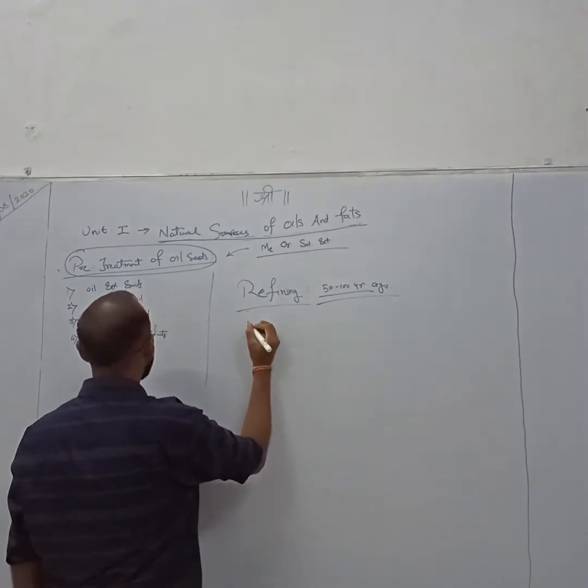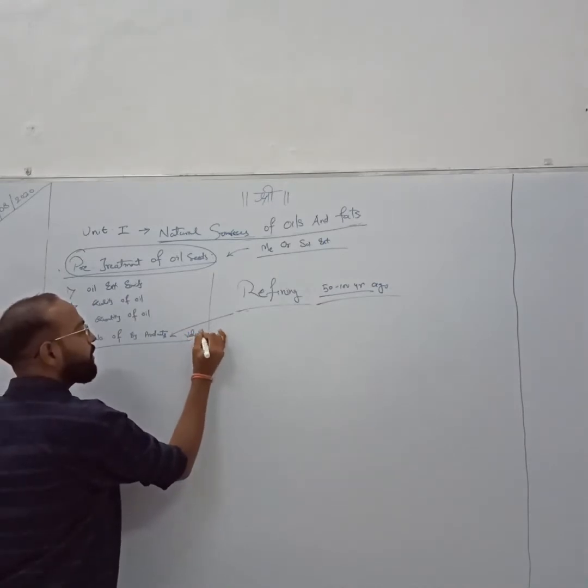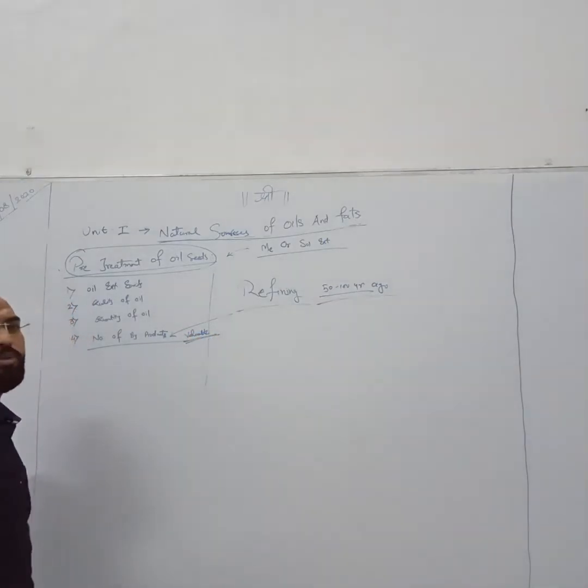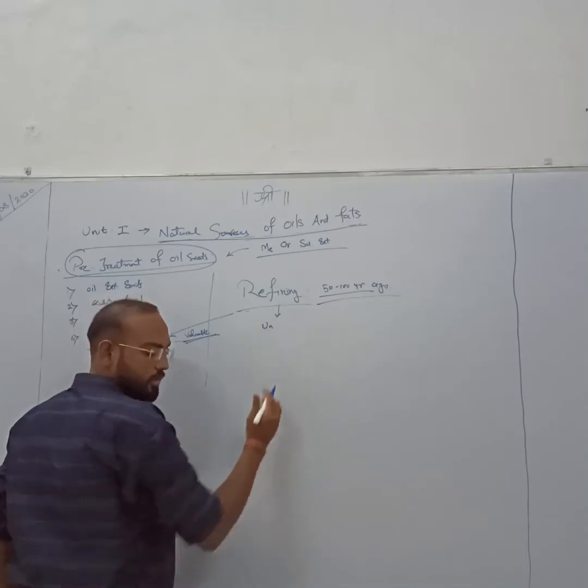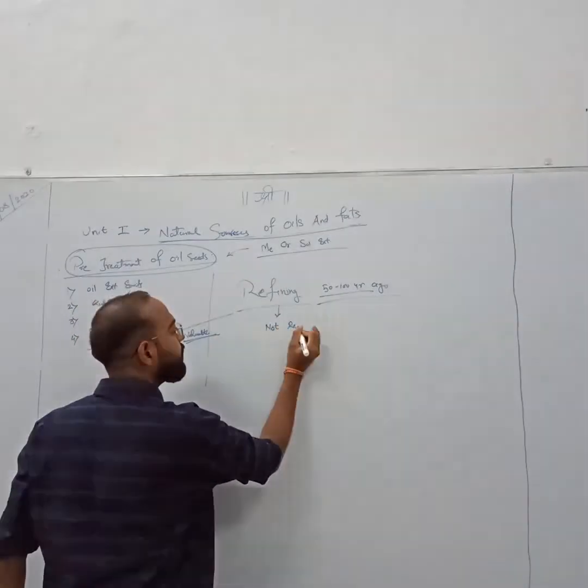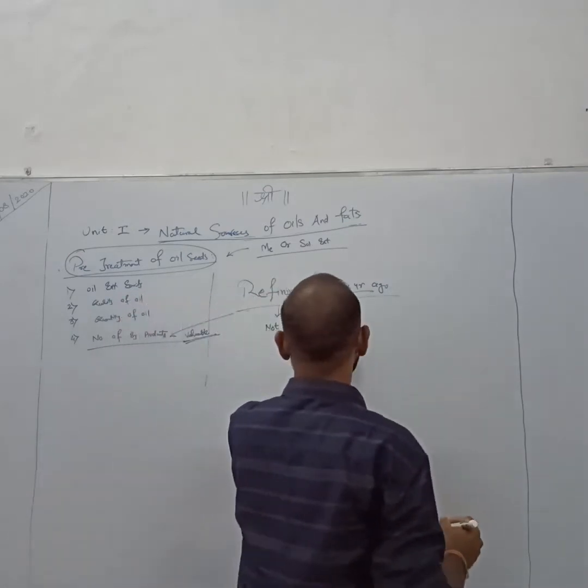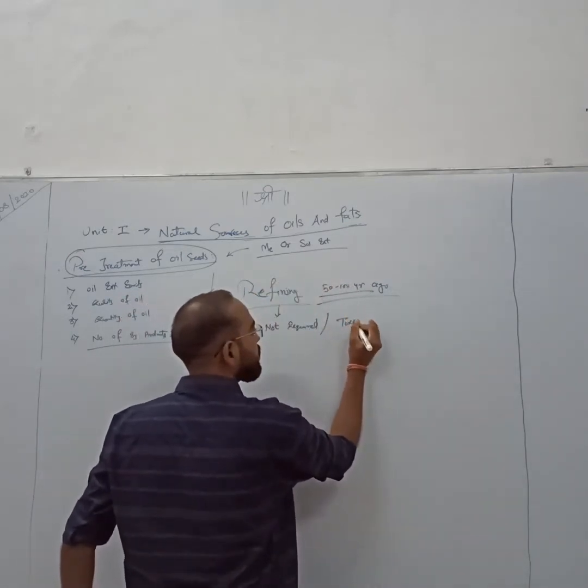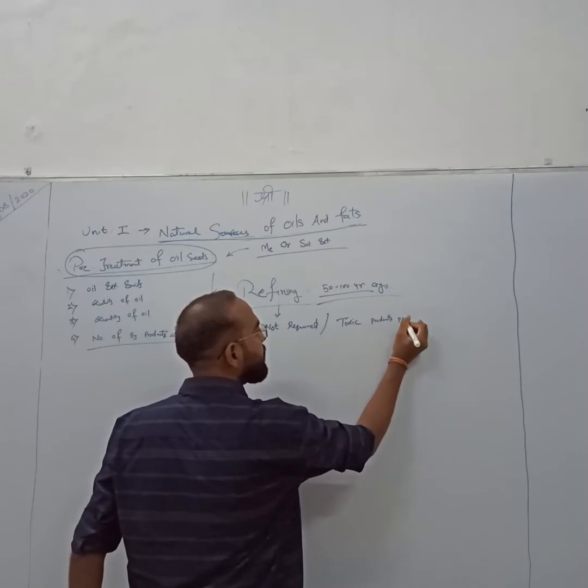First thing is we get n number of valuable byproducts - definitely useful and costlier byproducts you get. And to remove some unnecessary or not required, or sometimes toxic products, maybe in ppm level, should be removed.